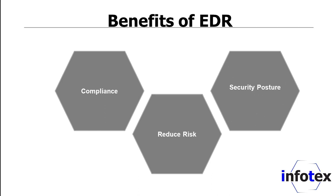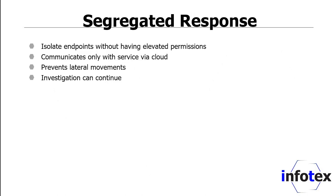Segregated response is another area where that cloud layer really comes into play. It allows you to isolate endpoints without having to elevate permissions, communicates only with the service via the cloud, prevents lateral movement, and investigation can continue via that cloud service. That allows us to take the affected endpoint off the network at 3 o'clock in the morning and be able to investigate that endpoint, and even sometimes remediate it, but at least take it off the network so it can't spread laterally and affect other systems and devices on your network.